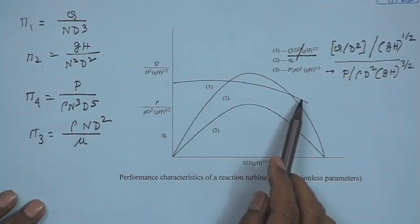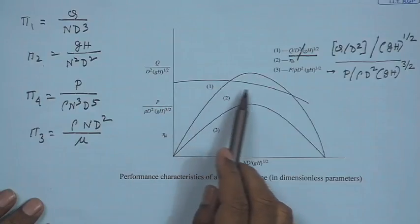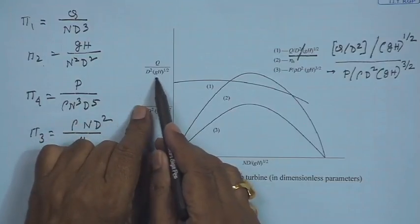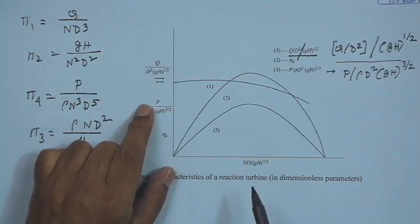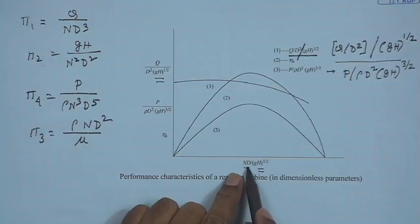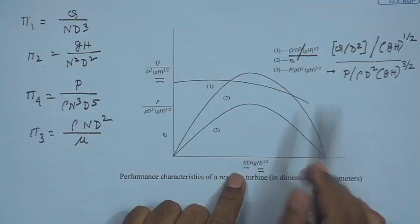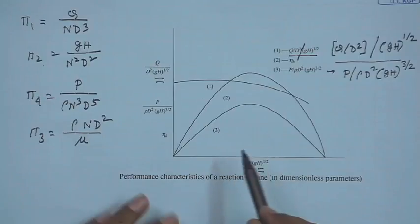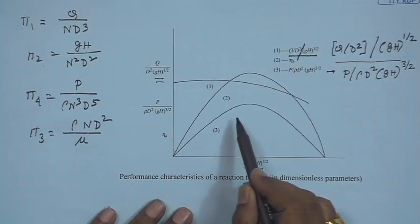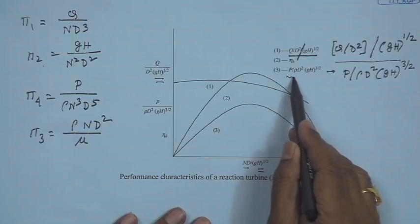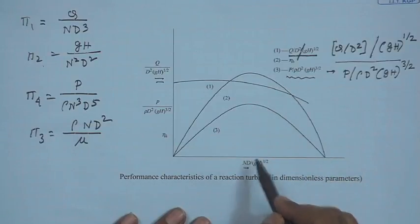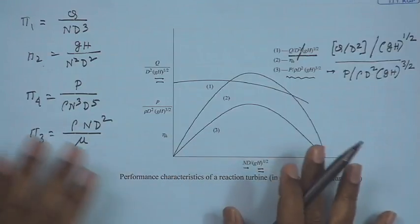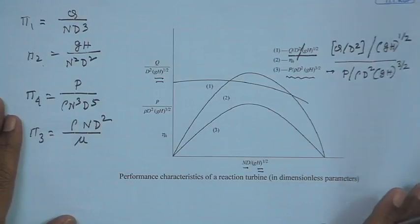The non-dimensional flow rate or capacity shows a decreasing trend with rotational speed for all reaction turbines. Since gH appears in normalizing both the flow rate and nD, the trend essentially captures the influence of Q with n. The hydraulic efficiency curve shows a maximum at a particular rotational speed, increasing and then falling again. This is purely a qualitative trend.